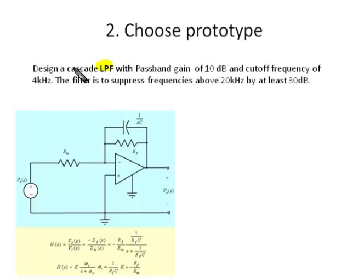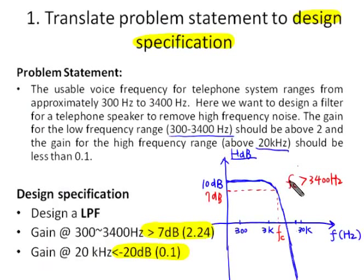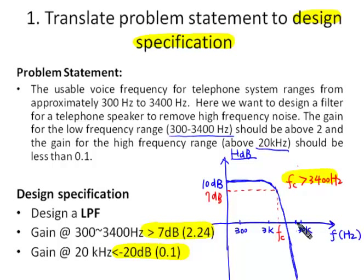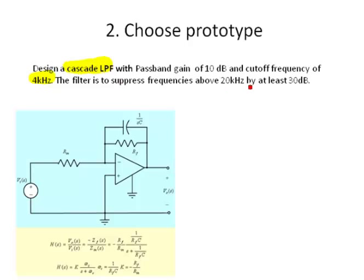For the first order low pass filter, we have shown the circuit and want to cascade it with other identical filters. The passband gain should be 10 dB, and we can set the cutoff frequency at 4 kHz — greater than 3.4 kHz as required. The filter needs to suppress the frequency at 20 kHz by at least 30 dB, meaning at 20 kHz the gain should be at most negative 20 dB (10 minus 30 = negative 20 dB).